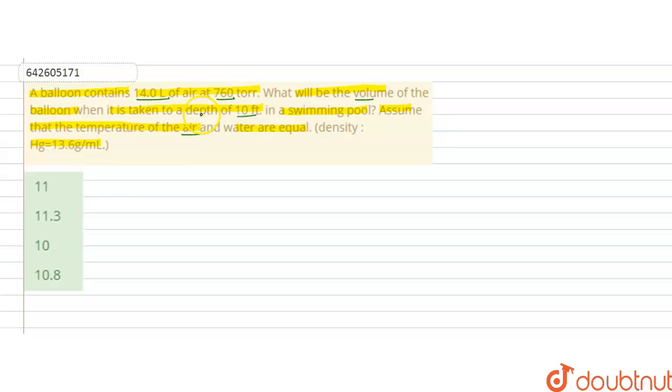So we are given P1, that is initial pressure, that is 760 torr, and in atmospheres it is equal to 1 atmosphere. And V1, that is given 14 litres.